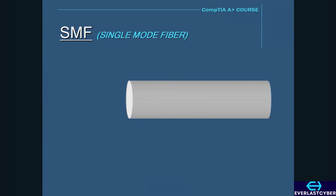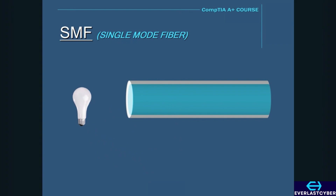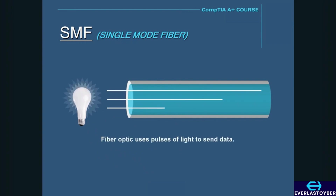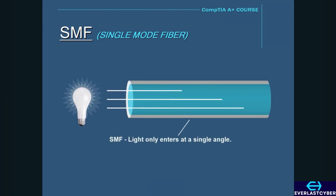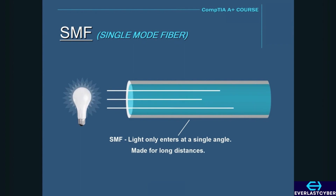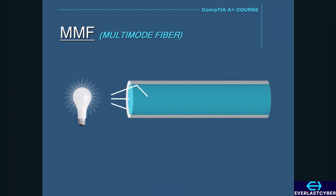Fiber optic cable uses pulses of light to send data, and as a result it is very fast and can span great distances. There are two different modes in fiber optics: single-mode fiber and multimode fiber. Single-mode fiber is a fiber optic cable that allows light to enter only at a single angle, and when light enters at this angle it can span great distances. Multimode fiber is different in that light travels in multiple beams that reflect off the walls of the cable, and unlike single-mode fiber, multimode fiber is made for short distances.